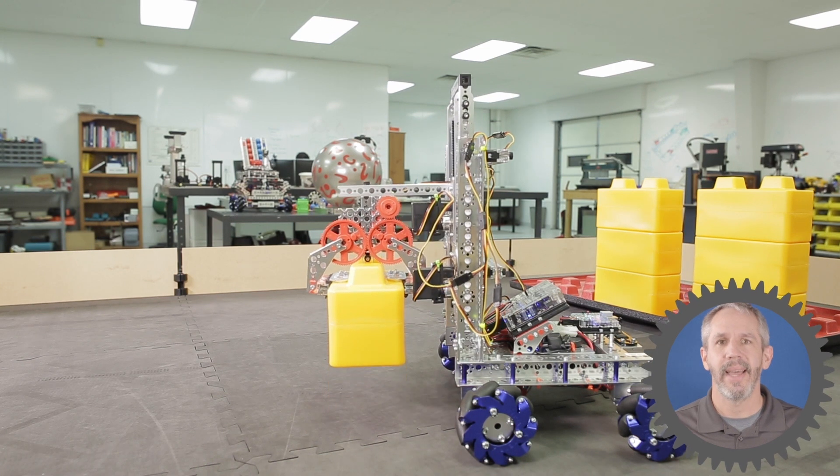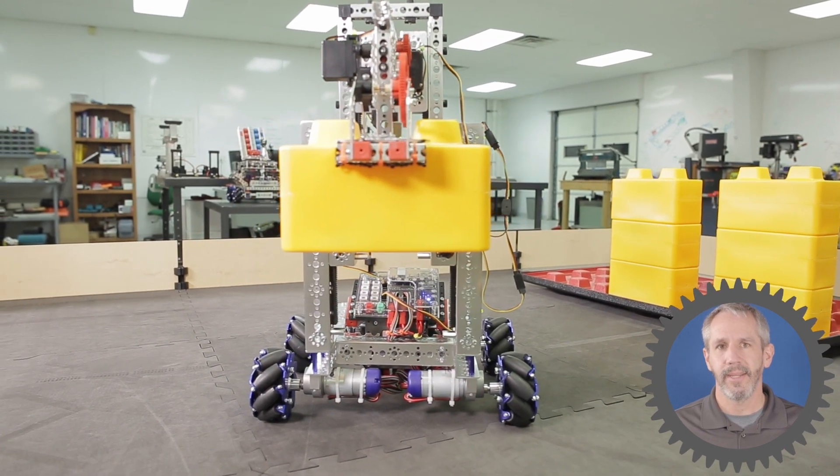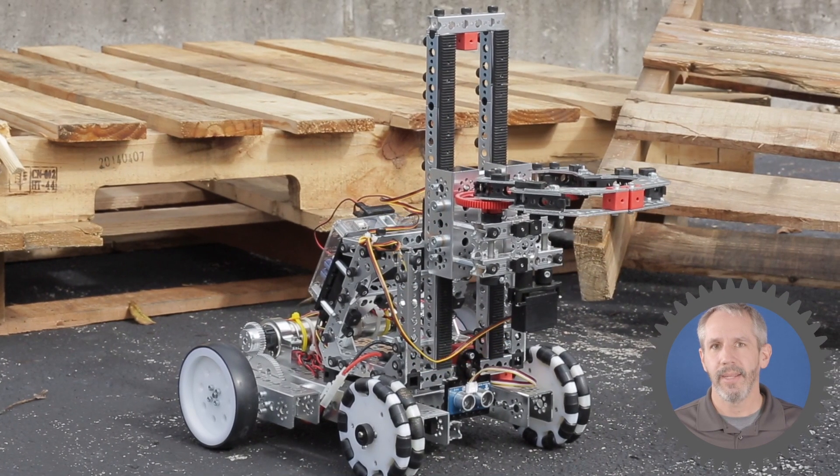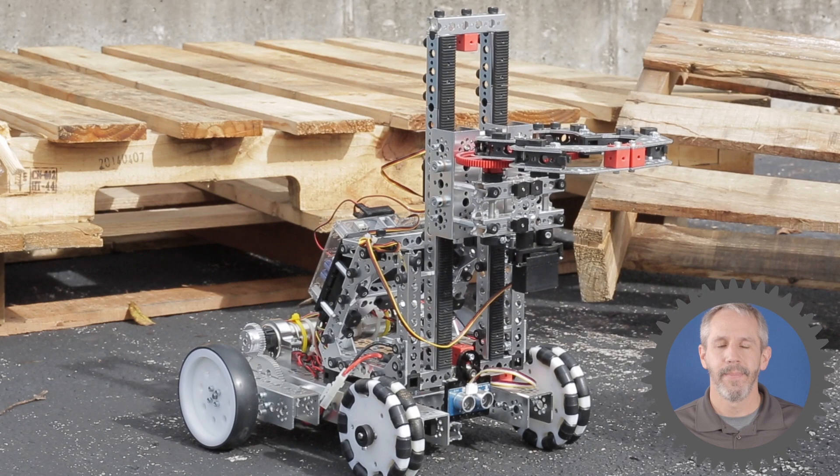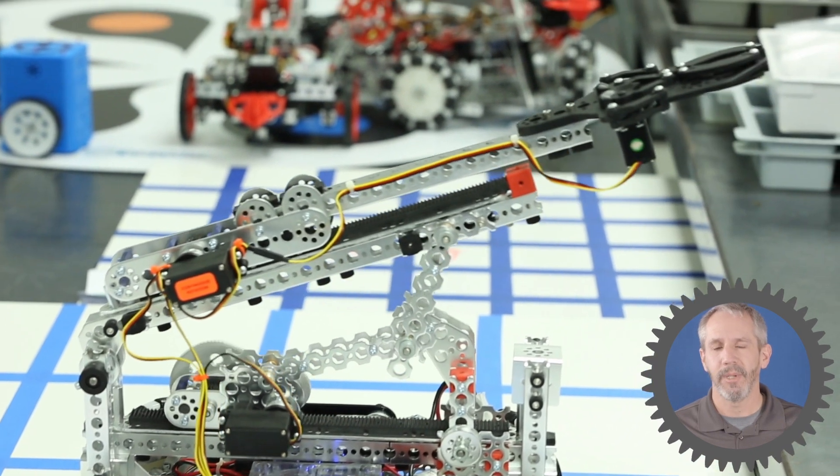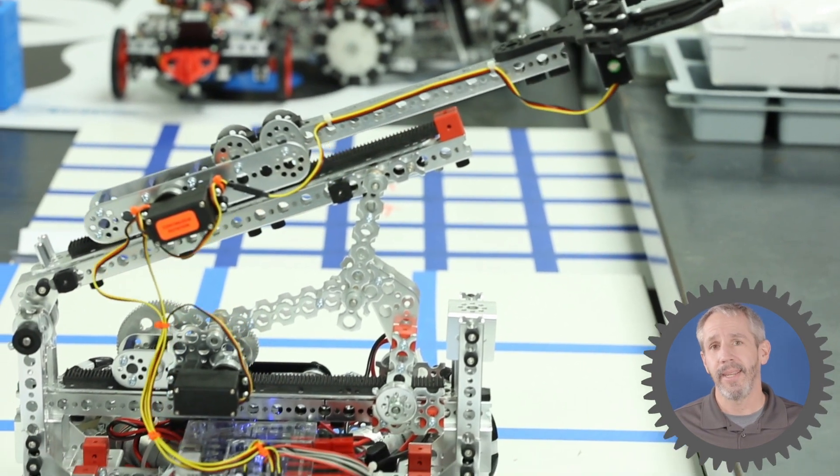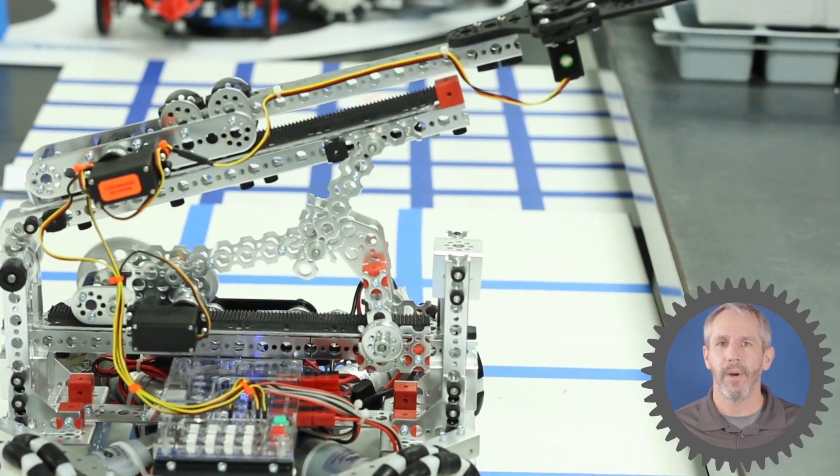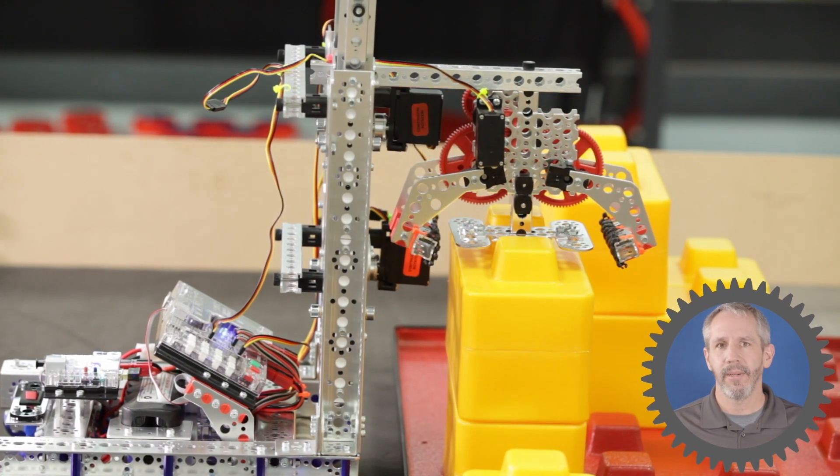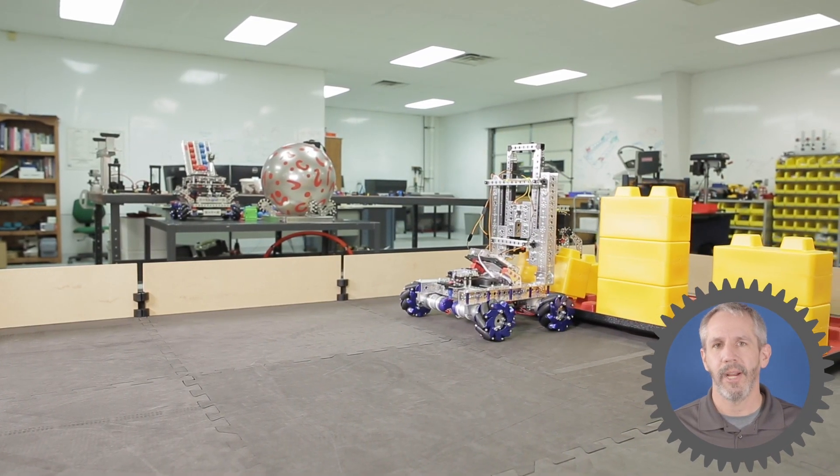So before we look at some robot examples, let's talk about a few things to consider. First, consider the goal of the challenge or competition: How heavy are the objects that need to be lifted? What is their size? How high does that object need to be placed as it's lifted? How are you going to grab hold of that object - from the front, from the top? And then as you lift that object, does it need to stay upright like a glass of water so it doesn't spill? And finally, as you're placing that object, does it have to be placed in a certain position? Does it have to be stacked? So those are some things to consider about the goal of the challenge or competition.